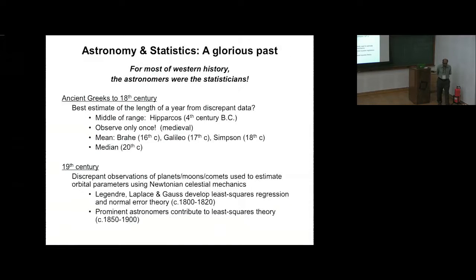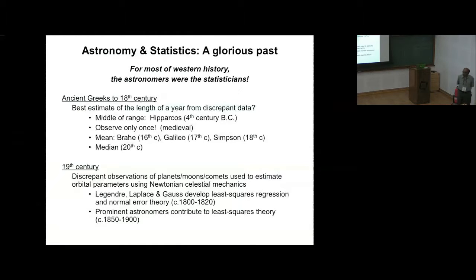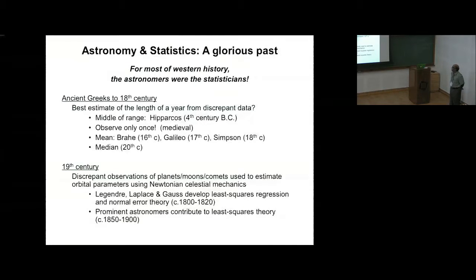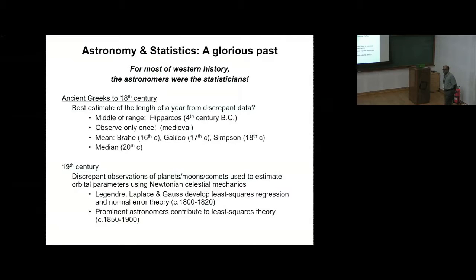Let's look at some background. Quite a few statistical concepts were derived due to problems in astronomy — for example, estimating the length of the year from different data. Hipparchus took the middle range of that as an estimate, and in medieval times people used to say that you should take one observation only, and measure it accurately, with no allowance for errors.